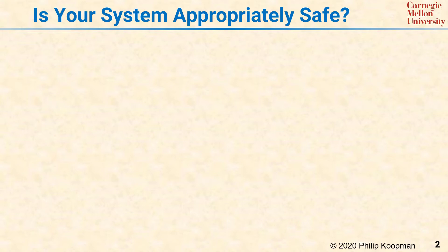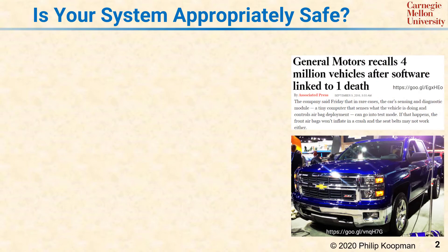As an example, in September 2016, General Motors had to recall 4 million vehicles because of a software defect that caused a fatality in a 2014 Chevy Silverado truck. The defect involves the airbag unit going into test mode during vehicle operation. If the airbag unit happens to be in self-test mode during a crash, the airbags do not inflate and the seat belt pre-tensioners do not activate. This defect is especially tricky because its effects only appear when there's actually a vehicle crash.